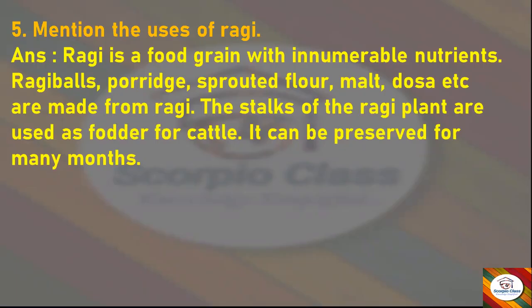Fifth question: Mention the uses of ragi. Answer: Ragi is a food grain with innumerable nutrients. Ragi balls, porridge, sprouted flour, malt, and dosa are made from ragi. The stalks of the ragi plant are used as fodder for cattle. It can be preserved for many months.